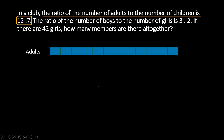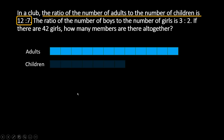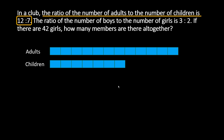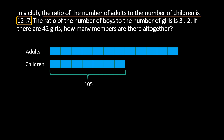So adults have 12 units and children have 7 units. But we have one piece of information already that we have figured out — that is children. The number of children is 105. This is the result we got from the previous working. So now the 7 units here is equal to 105. These are equal sized units and the total value is 105.